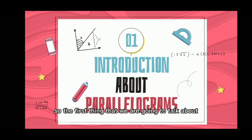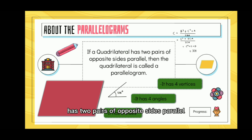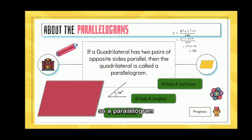The first thing we are going to talk about is an introduction about parallelograms. If a quadrilateral has two pairs of opposite sides parallel, then the quadrilateral is called a parallelogram. A parallelogram has four vertices, four angles, and four sides.